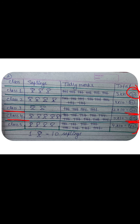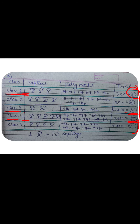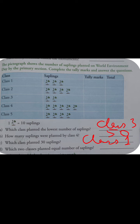So it means Class 4 planted a total of 50 saplings. Next: which class planted 30 saplings? We need to find which class planted 30. This is 30, and it was planted by Class 1. So the answer is Class 1.